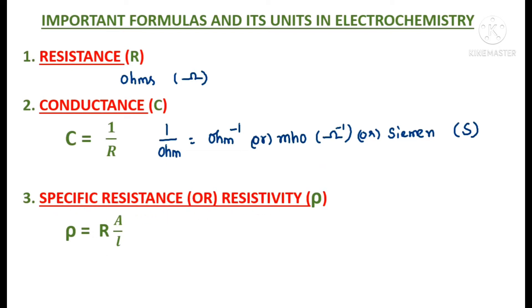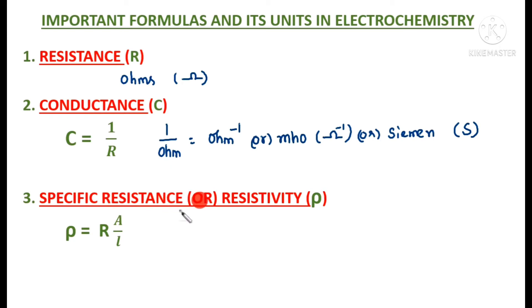Next is specific resistance, also called resistivity, represented by the symbol rho (ρ). Specific resistance is the resistance offered by a conductor having unit length and unit area of cross section. So rho is equal to resistance R multiplied by area A, divided by length L.